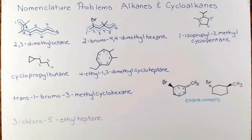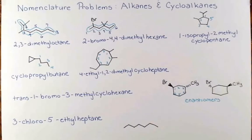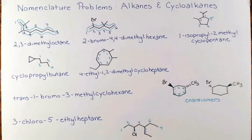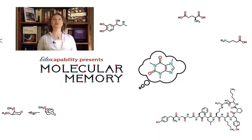Let's try one more problem generating a structure from a name: 3-chloro-5-ethylheptane. Begin by drawing out the 7-carbon chain from the prefix 'heptane'. Add numbers, then add chlorine at position 3 and the ethyl group at position 5. Notice these substituents were equidistant from each end. To determine direction, 'C' for chloro comes before 'E' for ethyl alphabetically, so we number from this end. If you learned something, give me a thumbs up, and for more chemistry, subscribe to my channel.